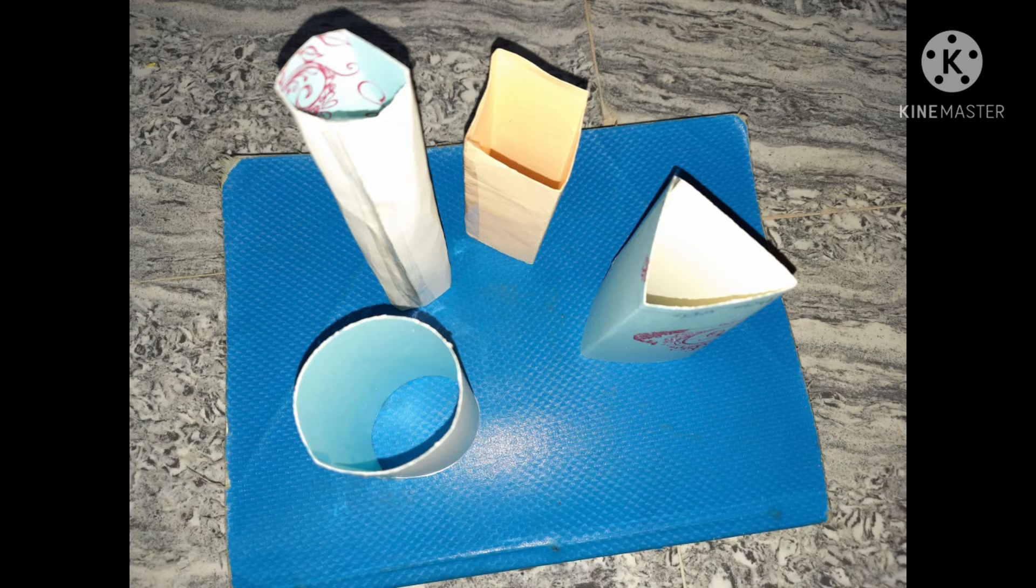Now I will fold the first cardboard like this to make pipe 1. I have joined the ends with cello tape.